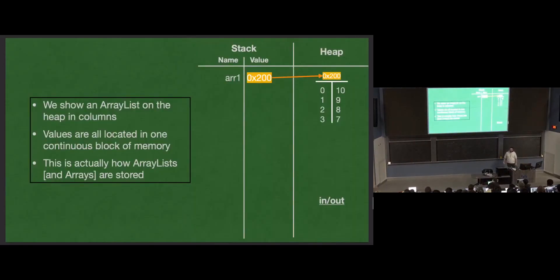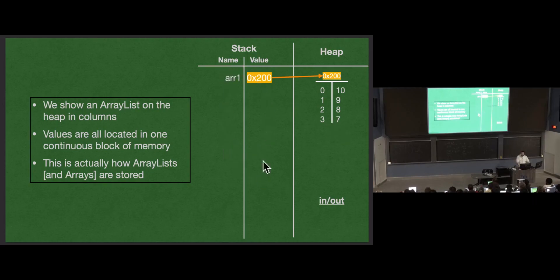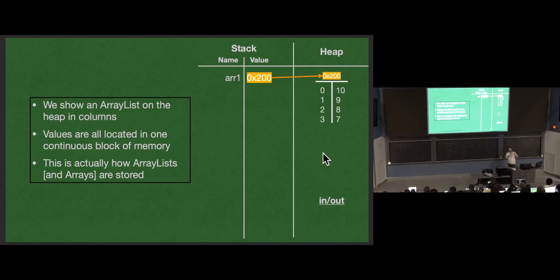In our memory diagram, we show an array with a memory address and two columns for the indices and values — a sequential data structure with all values right next to each other, because that is how they behave. Just like the stack, which shows name and value in two columns — those values are actually in memory right next to each other, in one chunk of memory for the stack. Each individual object on the heap is in a different place in memory, but that object — in this case an ArrayList — is all in one portion of memory. All the values in an ArrayList are right next to each other, just like all instance variables of an object are right next to each other in memory.